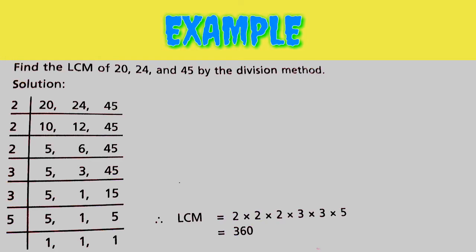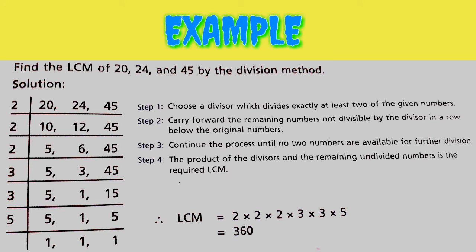Example: Find the LCM of 20, 24 and 45 by the Division Method. Step 1: Choose a divisor. The divisor is 2, which divides exactly at least two of the given numbers.